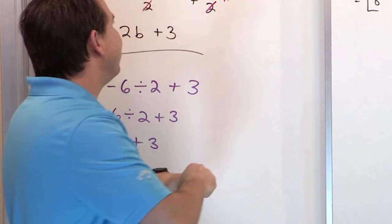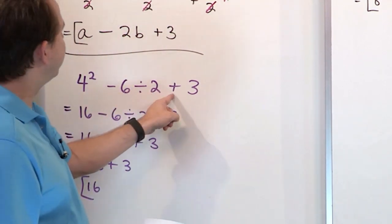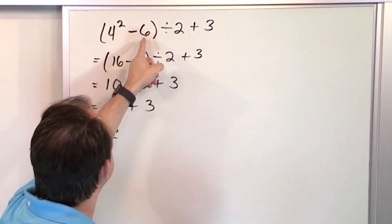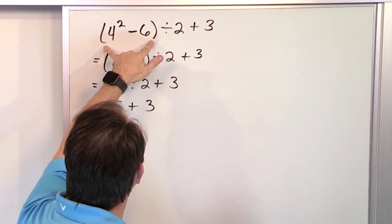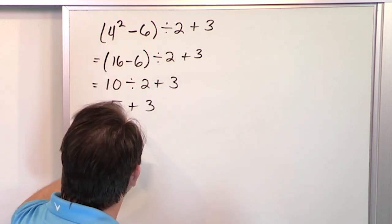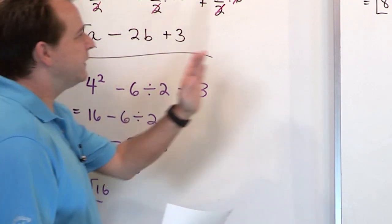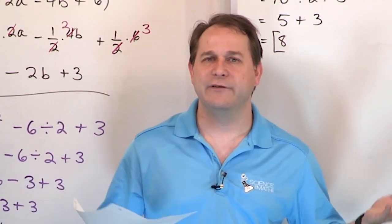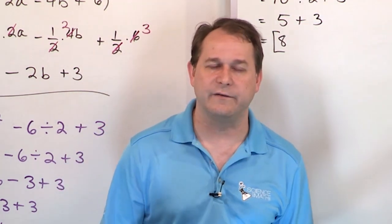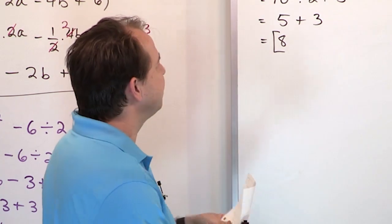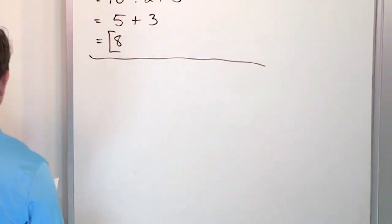Now I want you to look at these two problems quickly. It's 4 squared minus 6 divided by 2 plus 3, and then 4 squared minus 6 (in parentheses) divided by 2 plus 3. Everything's the same — it's just that we put parentheses around the first two terms. Notice we got 8 for the answer with parentheses, and 16 without. This shows that order of operations matters, because if you ignore the parentheses, you get the totally wrong answer.